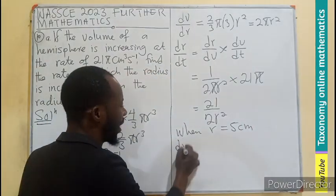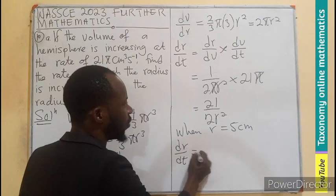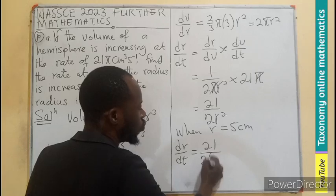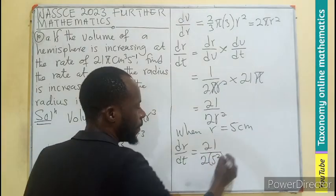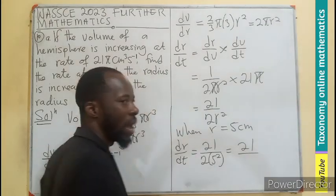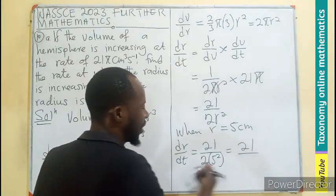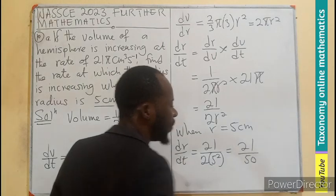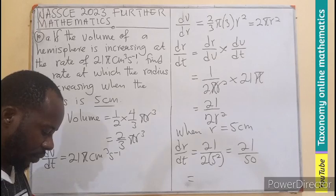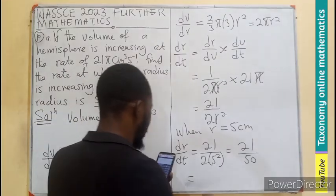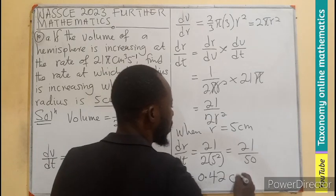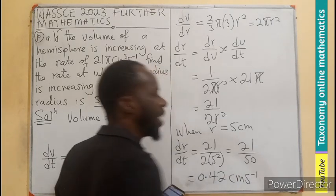And the real value of change for dR/dT is going to mean that 21 divided by 2 times 5². And that would be 21 over 50. That would be 21/50. So this in decimal will give us 0.42 centimeters per second.